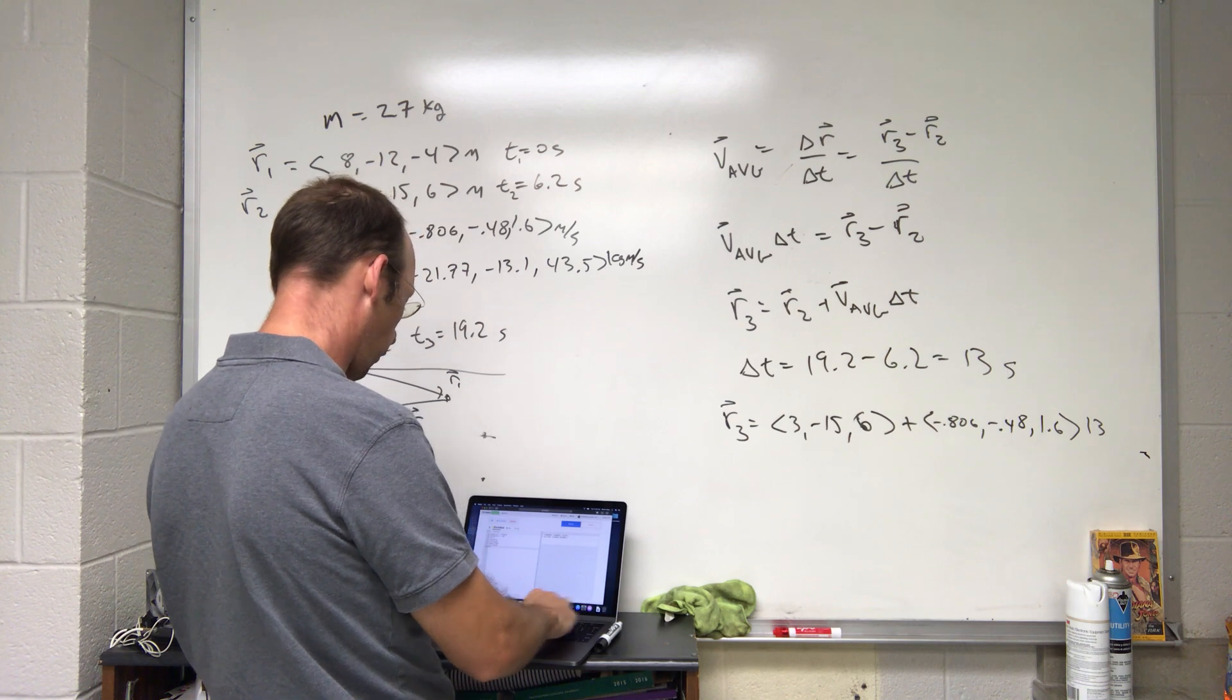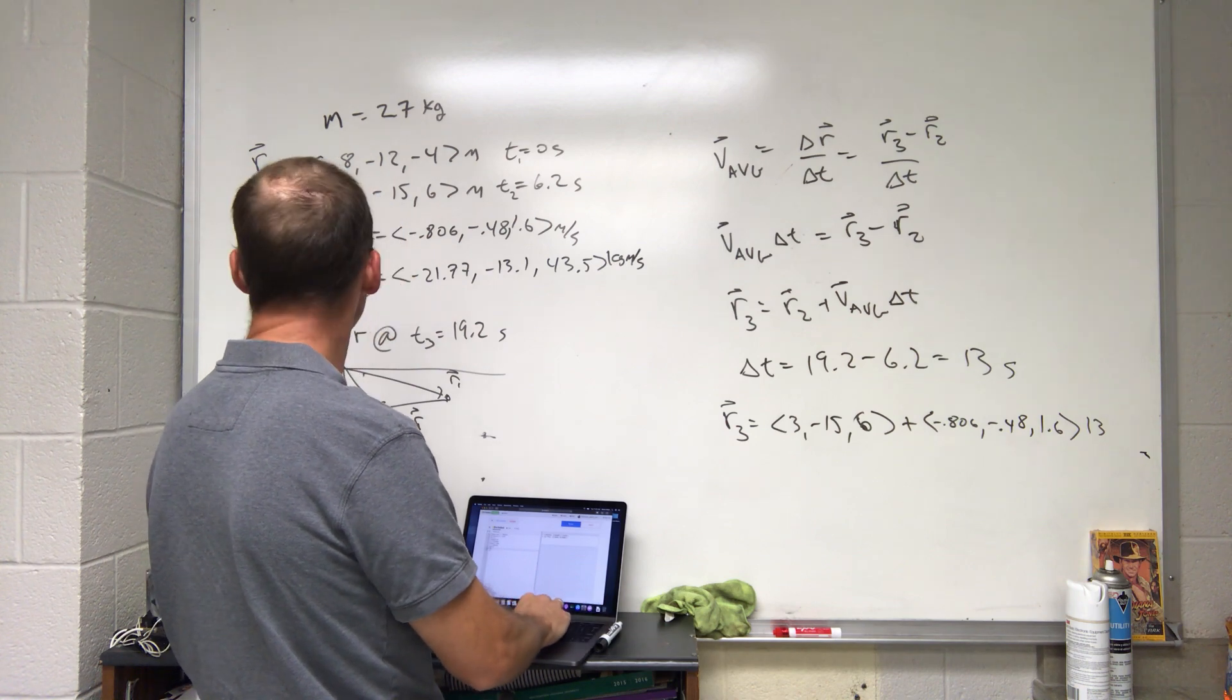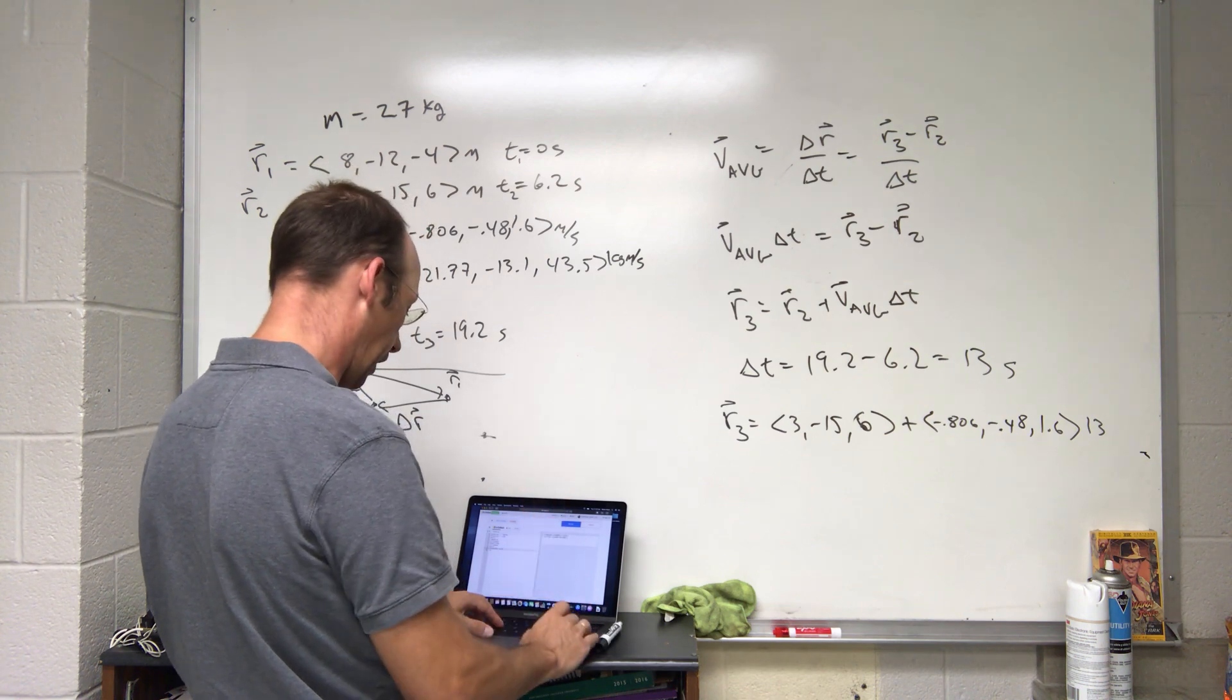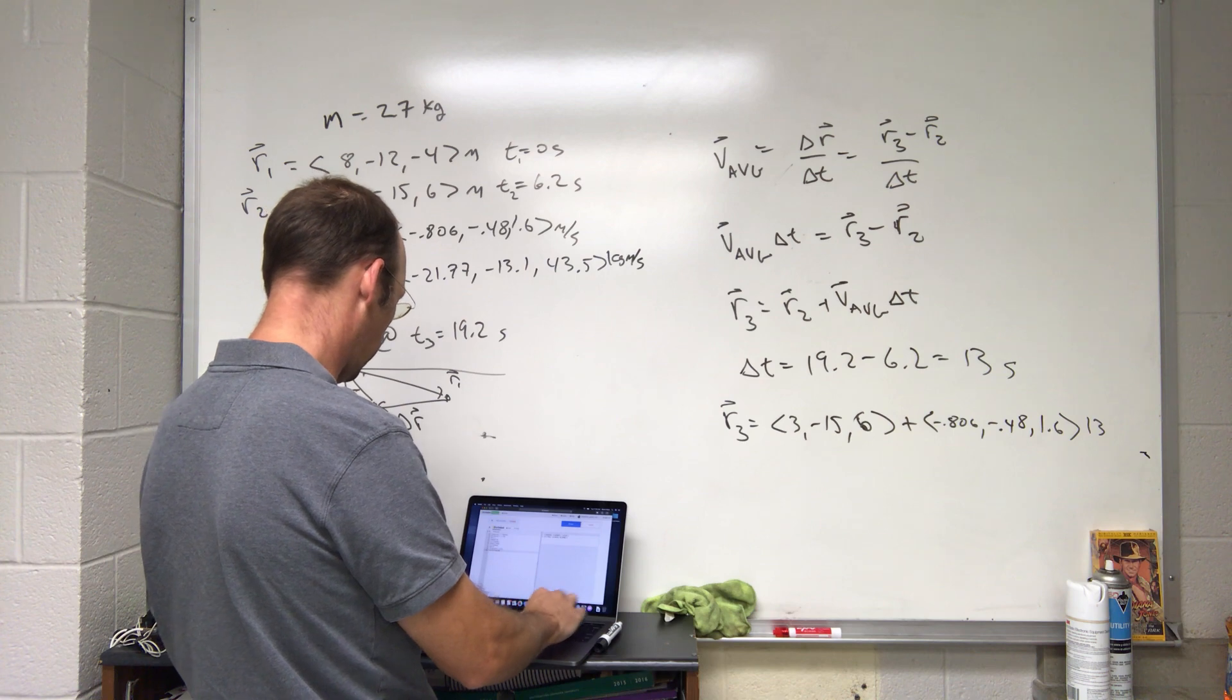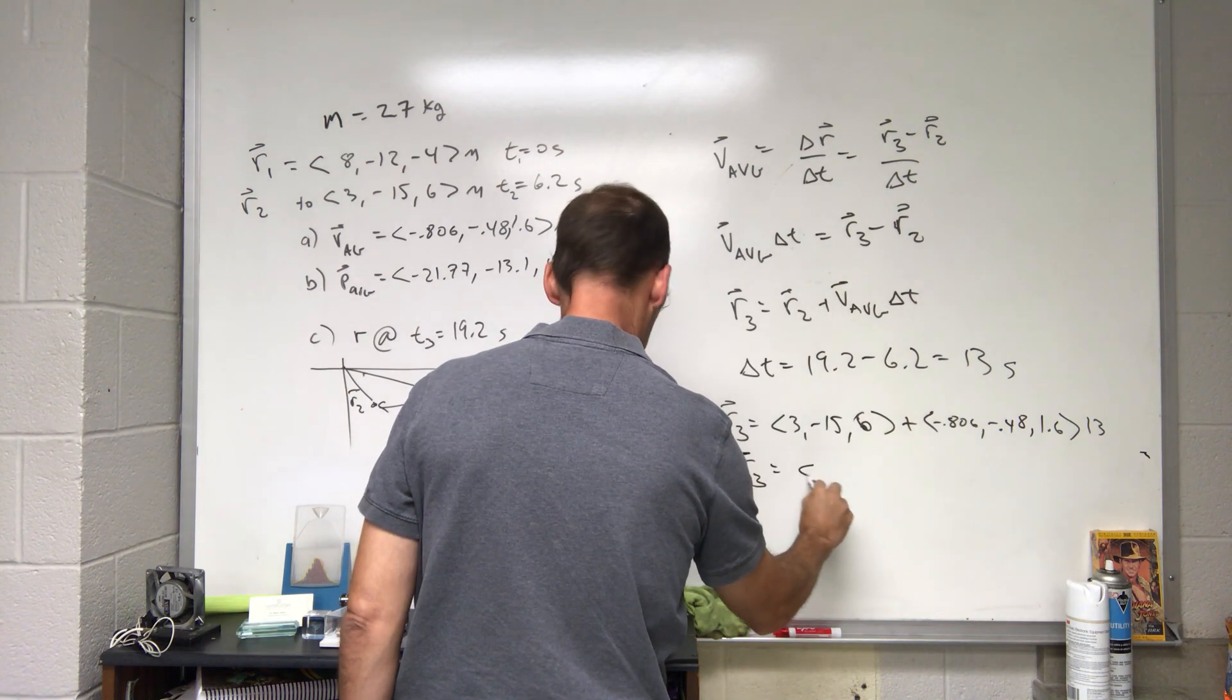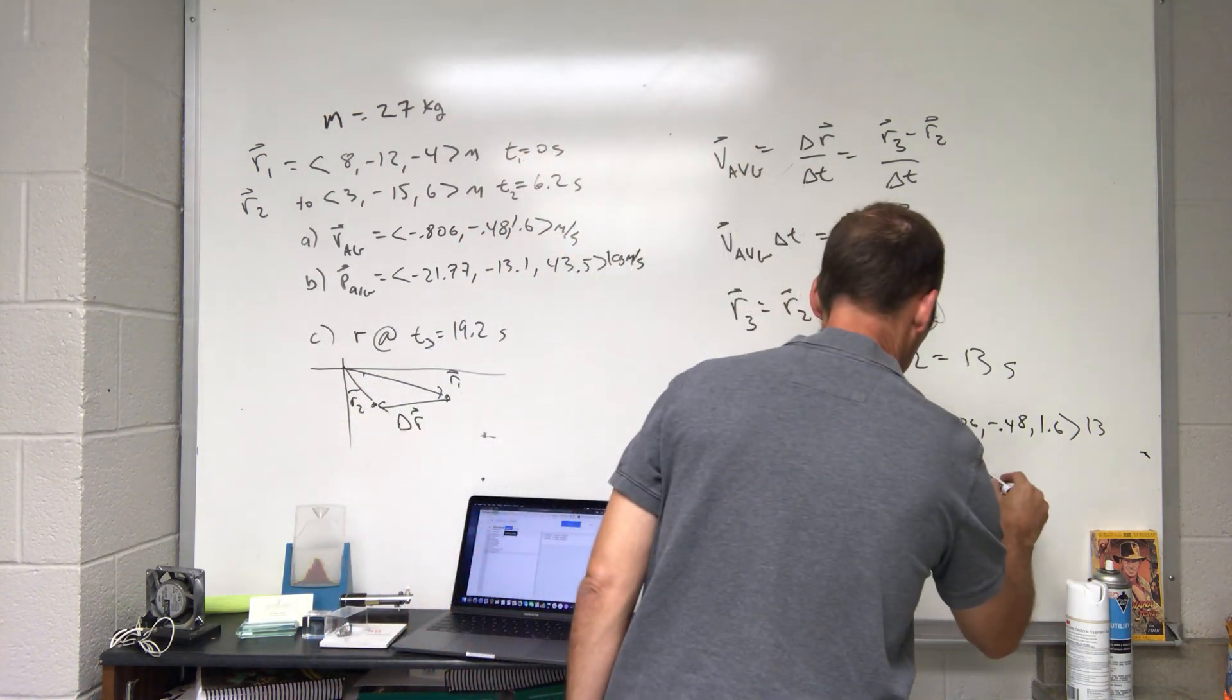Let's say dt3 is 13. I'm trying to find r3. r3 is going to be r2, which I never said, r2 equals (3, -15, 6). I already have the v average, so this is going to be r2 plus v average times dt3. And I get r3 is negative 7.48, negative 21.3, and 27 meters.